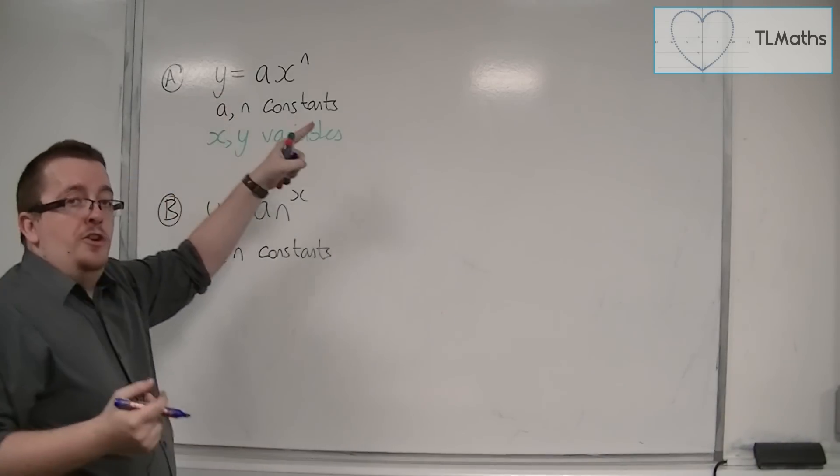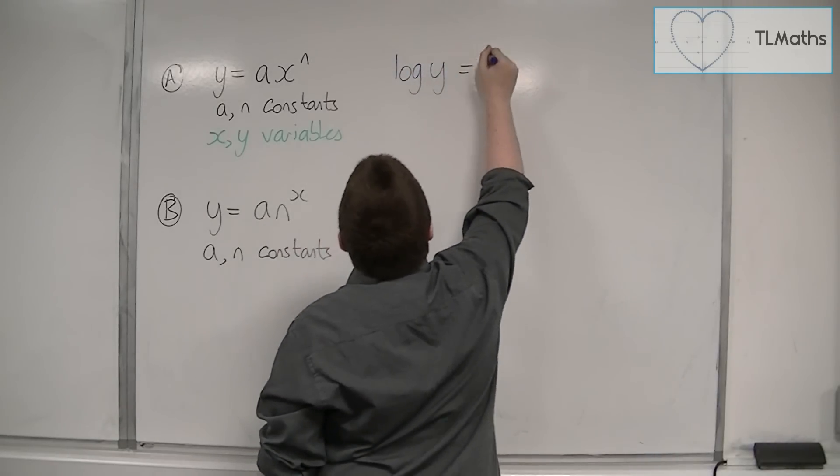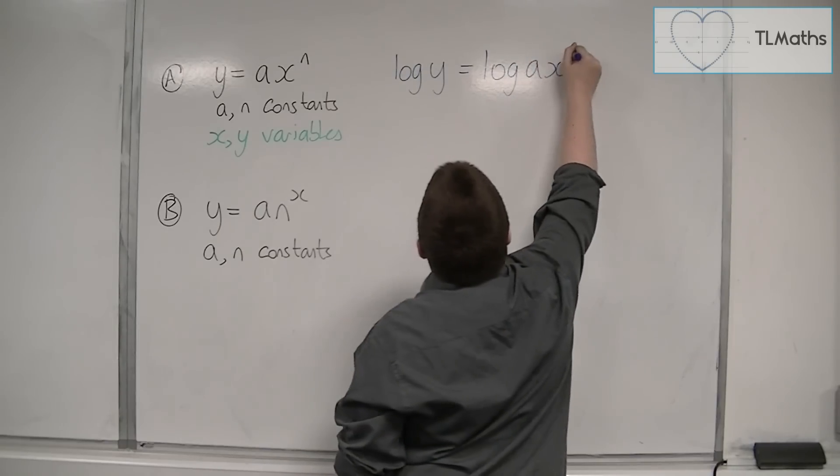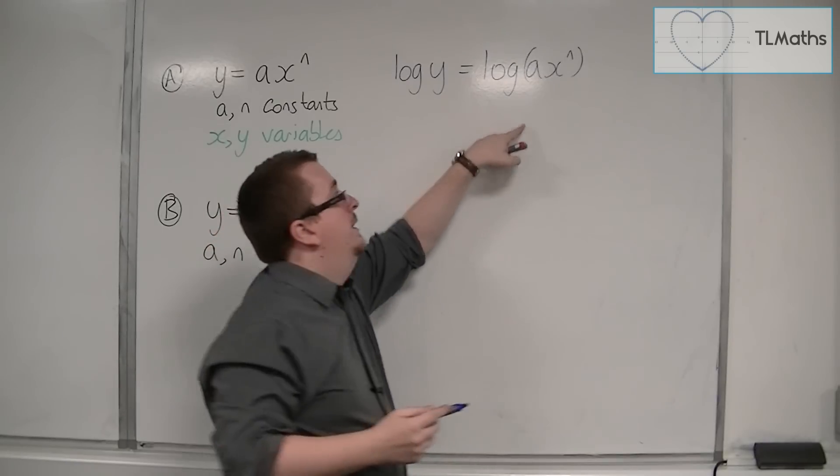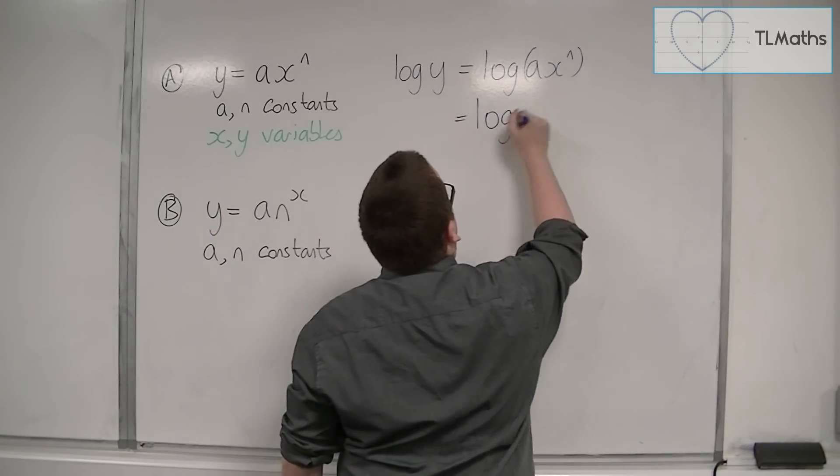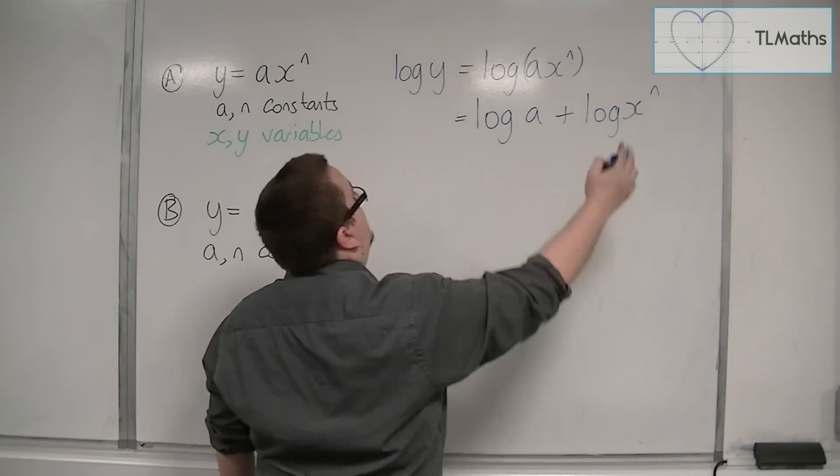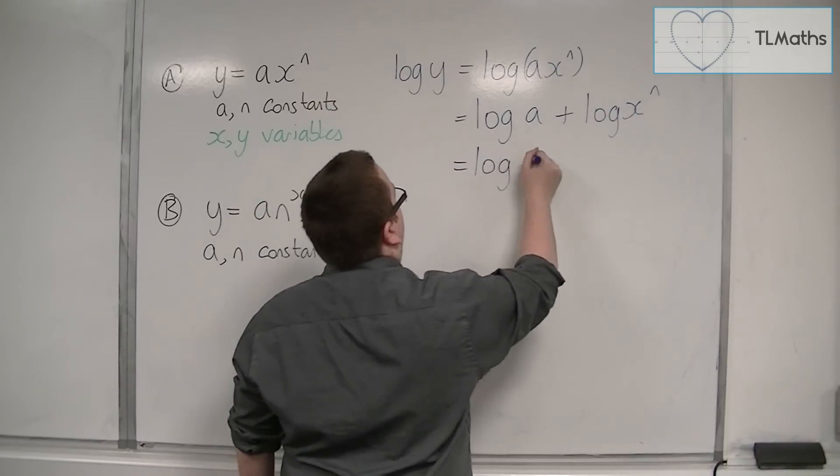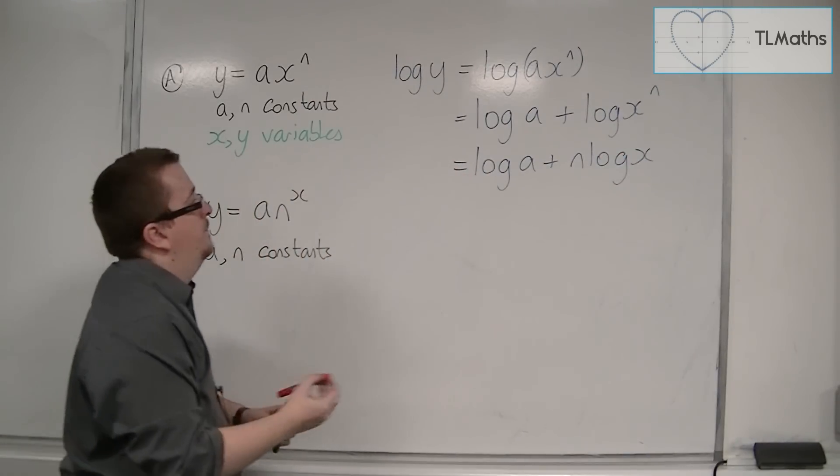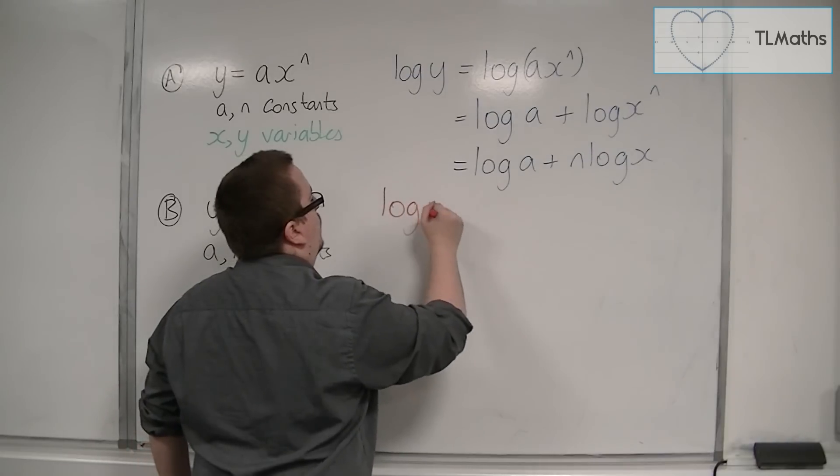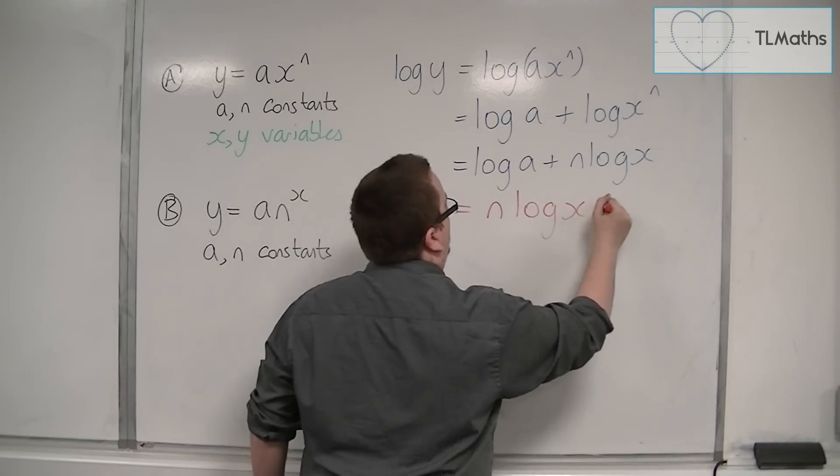If I log both sides, I'm going to take logs of base 10. So log y is equal to log of ax to the n. Now, this logarithm here can be split apart using one of the log laws. So I have log a plus log of x to the n, and then the n can come down to the front.